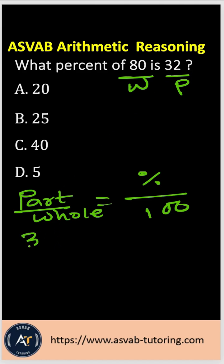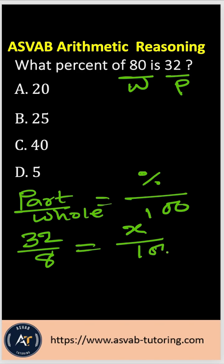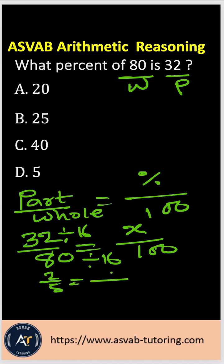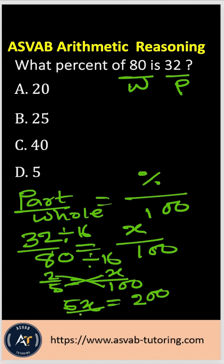So that gives us 32 over 80 equals X over 100. If you simplify by dividing both sides by 16, you get 2 over 5 equals X over 100. Cross-multiplying gives 5X equals 200; dividing both sides by 5 gives X equals 40. The correct answer is option C.